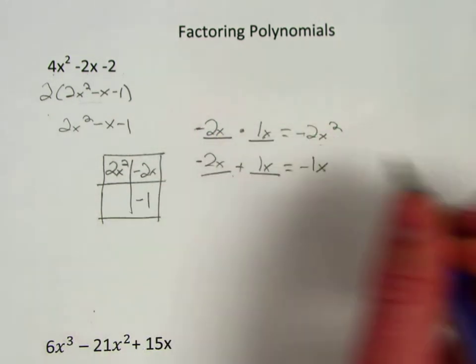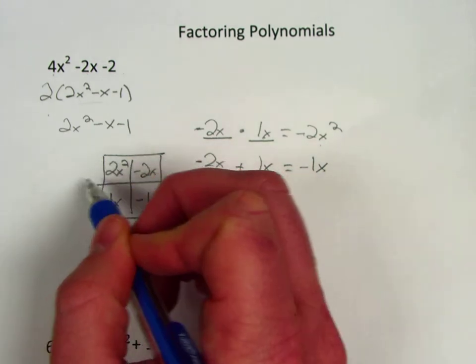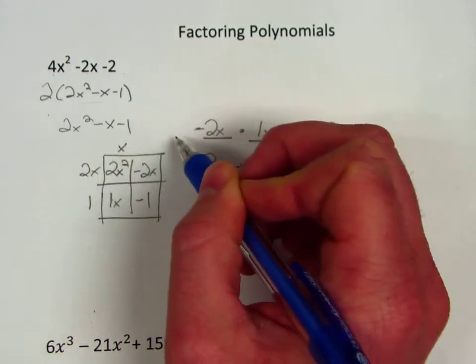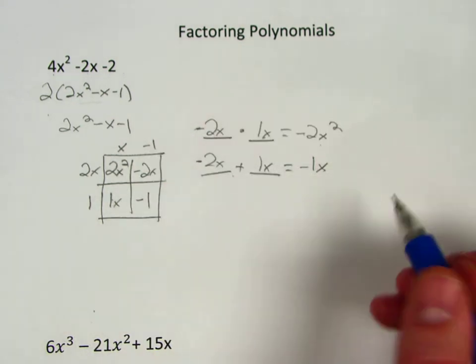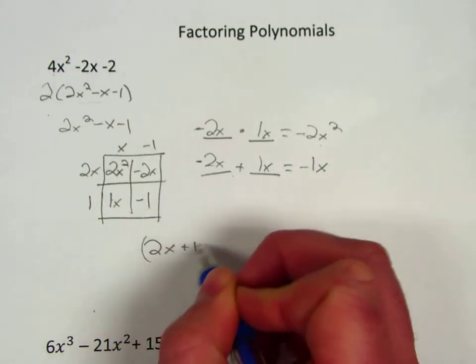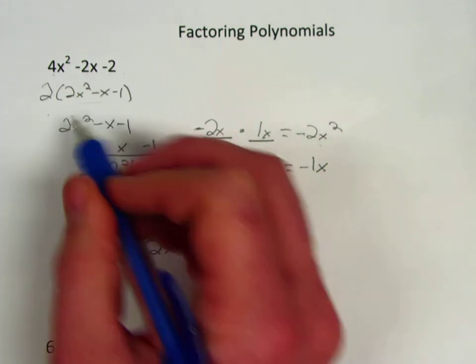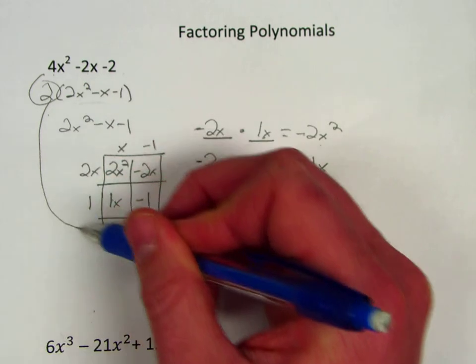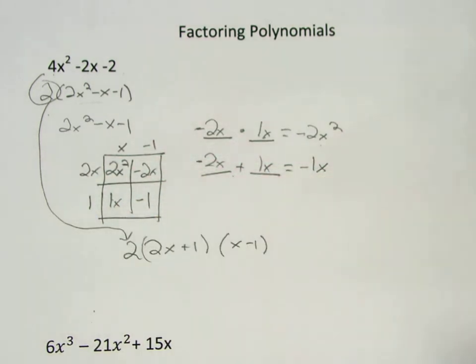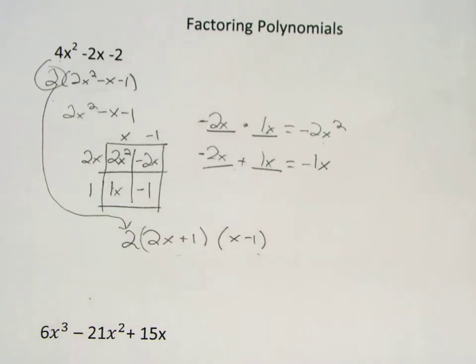So this must be my negative, so I place those in my box—doesn't matter which one goes where—and then I factor out my GCF and I end up with the factors of 2x + 1 times x - 1. And then I can't forget about this 2 that I factored out before we started, so here's my factors of this polynomial.